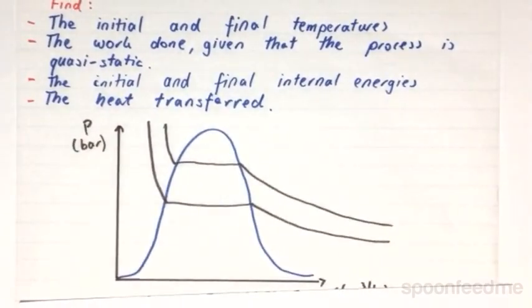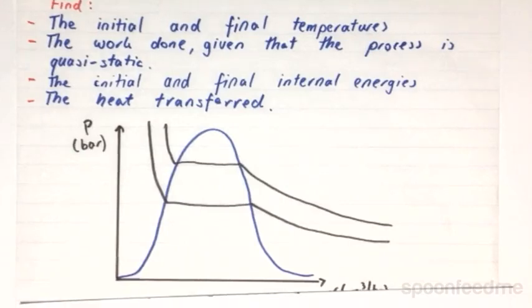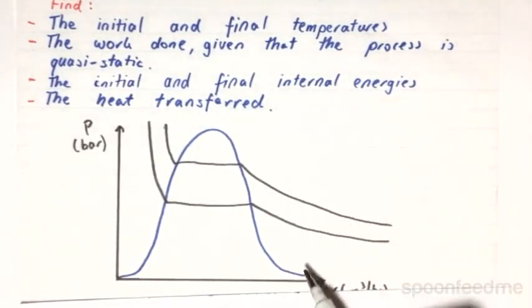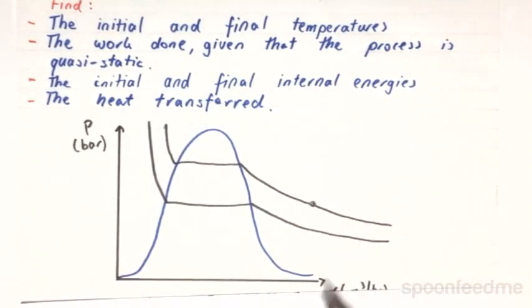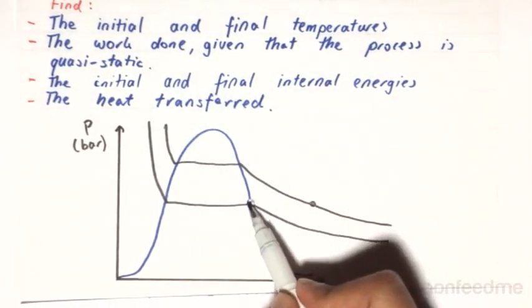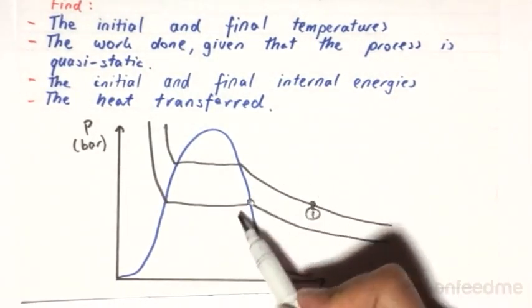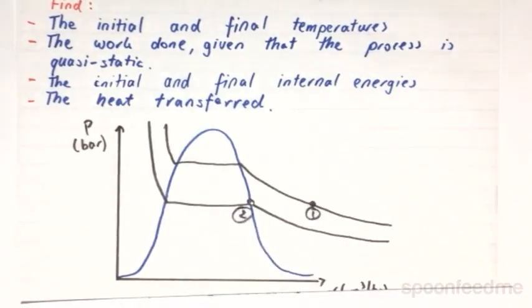We have a system that is initially at 1 megapascals with a density of 3.4 kilograms per metre cubed, and since it says that it's going to be compressed to the saturated vapour, we can safely assume that the volume is going to be somewhere around here, and then it's going to hit this point here. So that's point 1, and that is point 2.